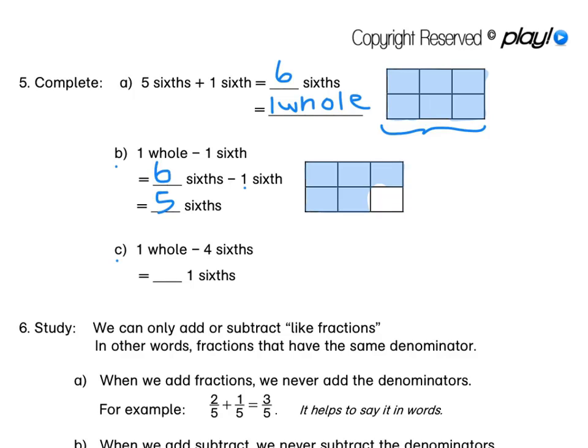For C, 1 whole minus 4 sixths. Now 1 whole — you must immediately think 6 sixths. So 6 sixths minus 4 sixths means that we are left with 2 sixths.